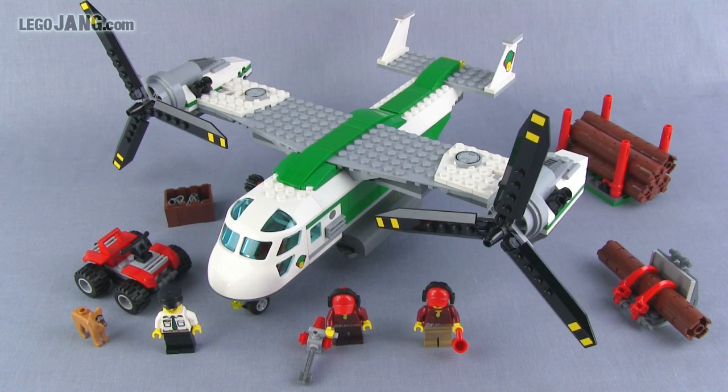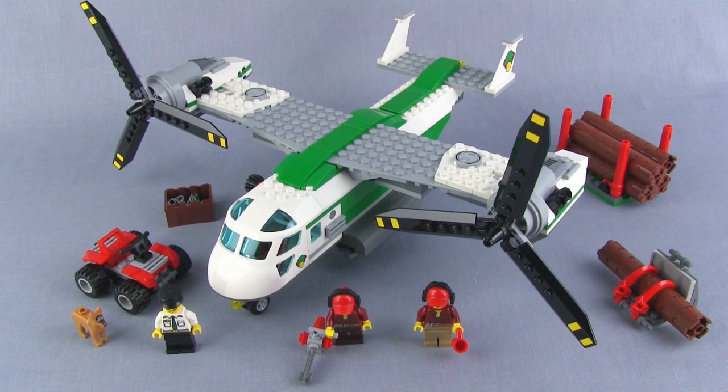Hey folks, it's Jang here with LEGO City set number 60021. It's the cargo heli plane and comes with officially 393 pieces. This has been out for a few weeks now in the UK where it sells for 35 pounds. As of the time of this video it hasn't come out in the US yet so I don't know what the US price will be.